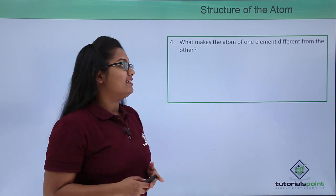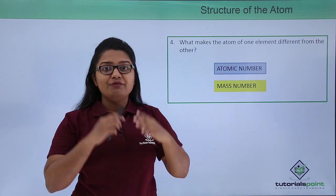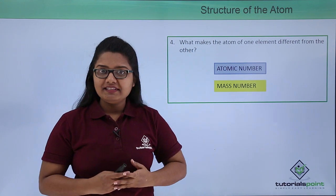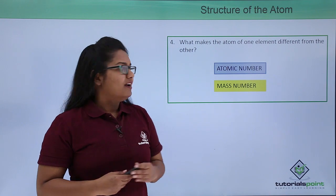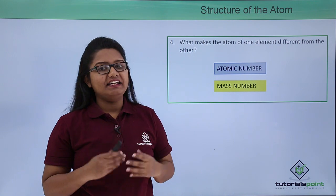Later on, it was found by the scientists that it is the atomic number and the mass number which make the atoms of different elements different from each other. We will learn about the atomic number and mass number in our upcoming videos in detail.